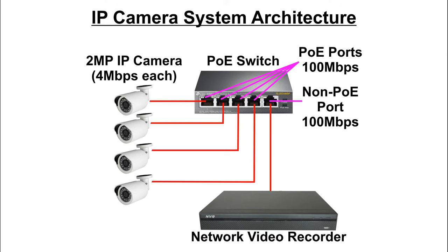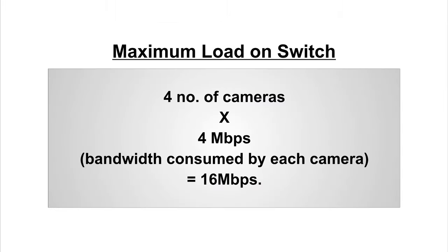Consider the simplest IP system architecture: four 2-megapixel cameras connected to a 100 Mbps PoE switch, which is further connected to the NVR. Using the 70% thumb rule, we use this switch up to 70 Mbps. Each camera consumes 4 Mbps — well below the per-port limit. At the NVR port, total load is 4 cameras × 4 Mbps = 16 Mbps, again well below the 70 Mbps limit.